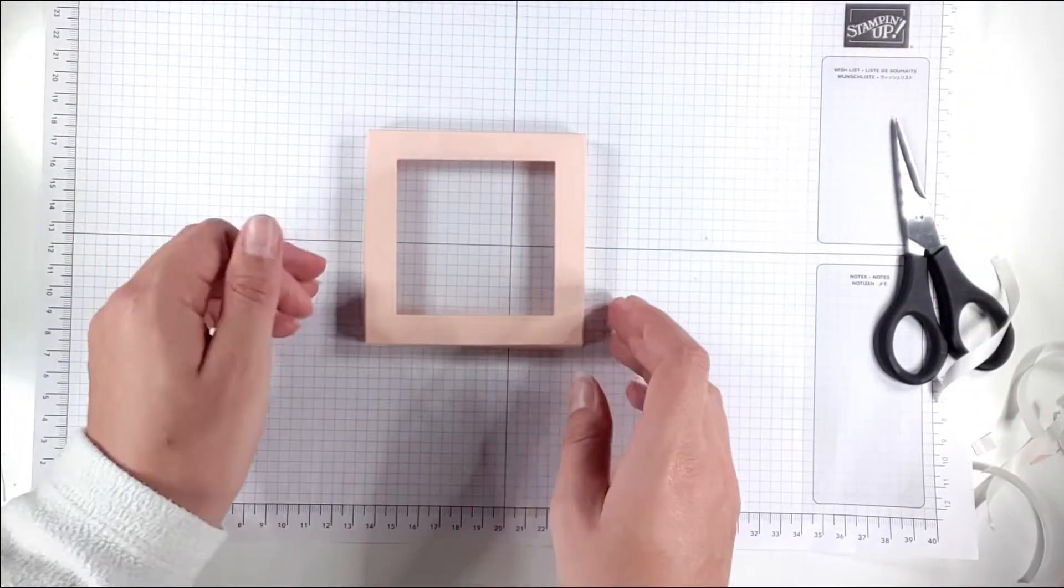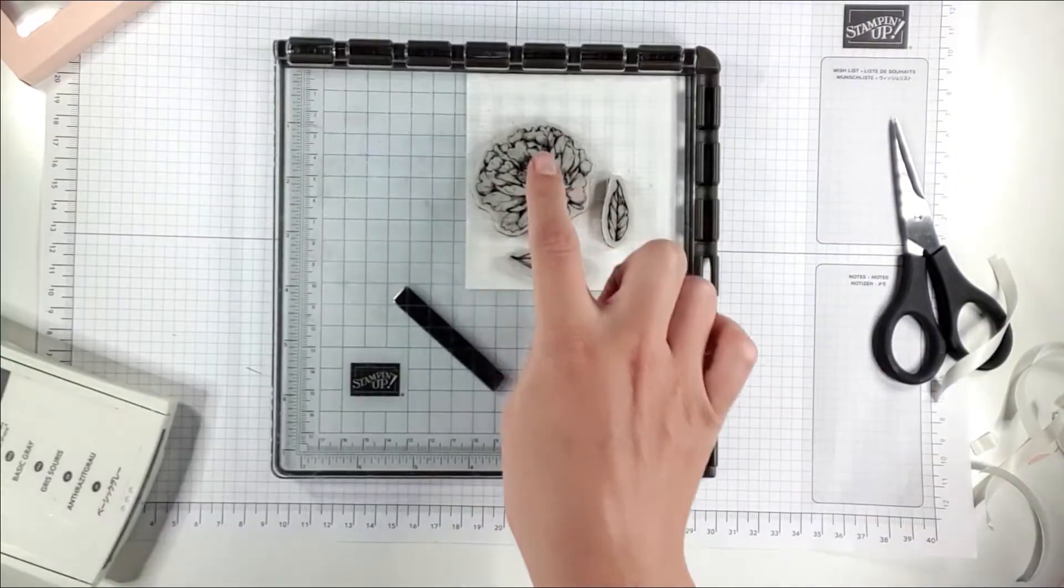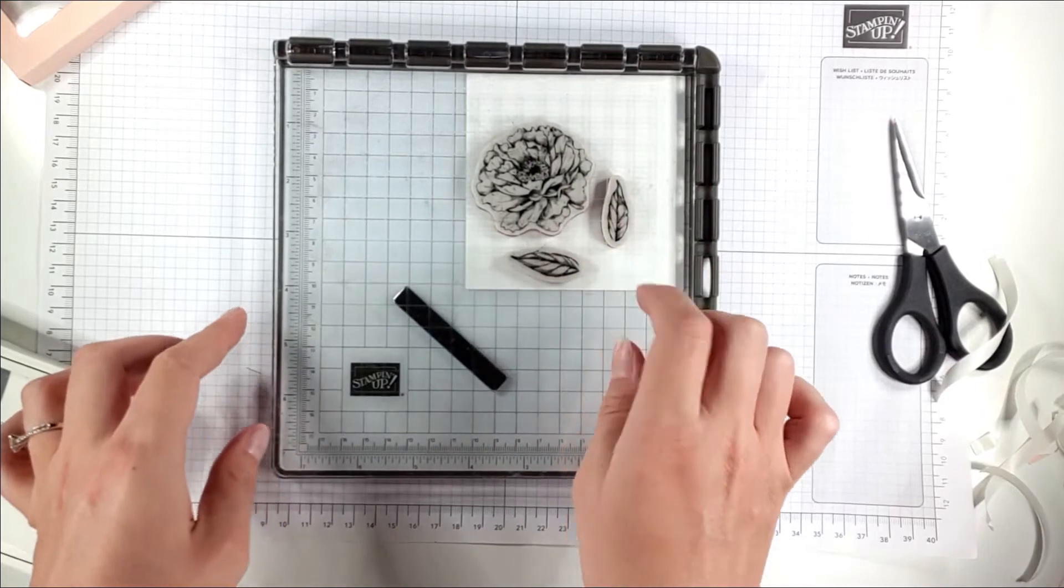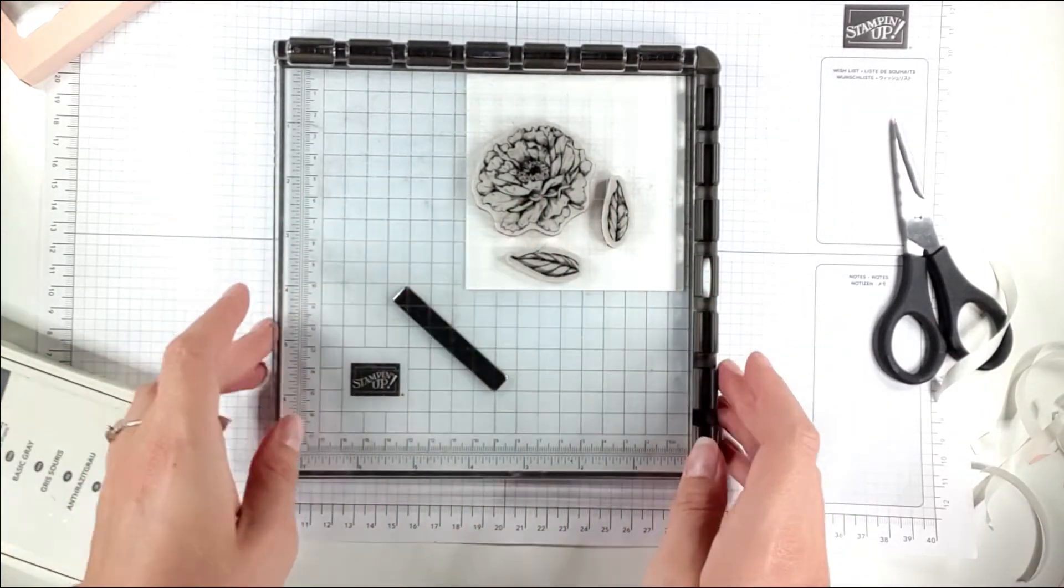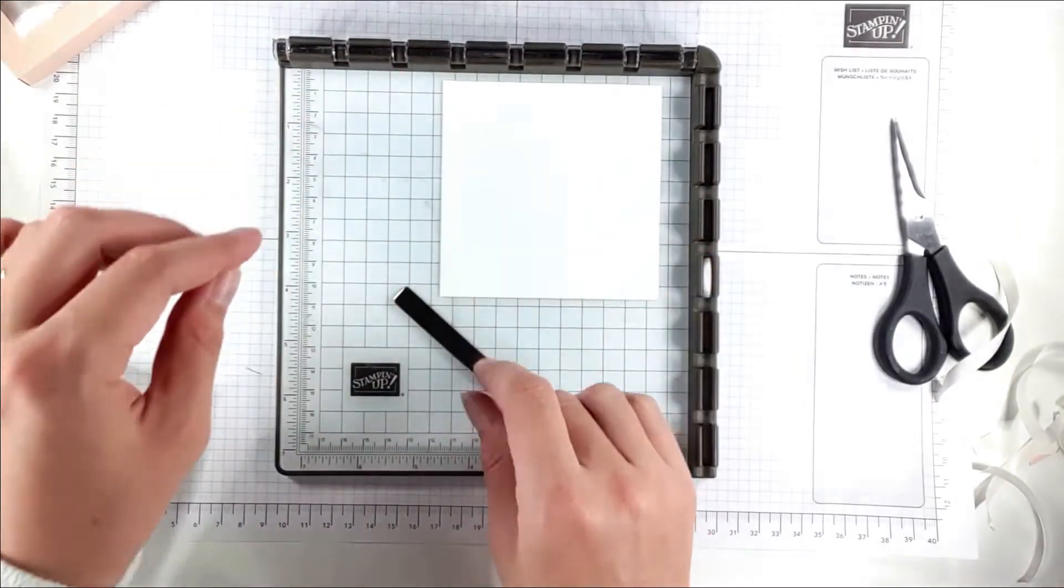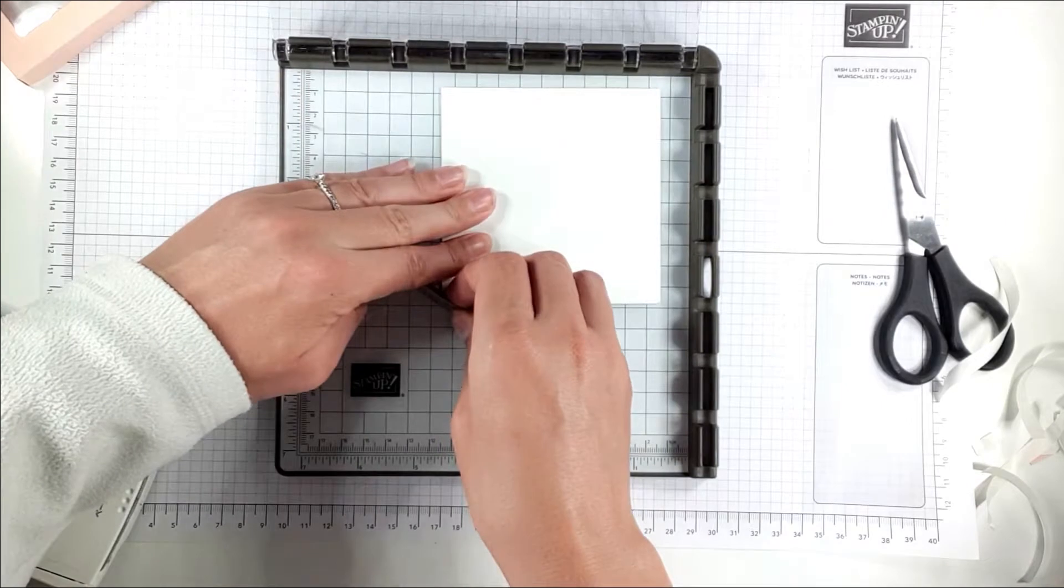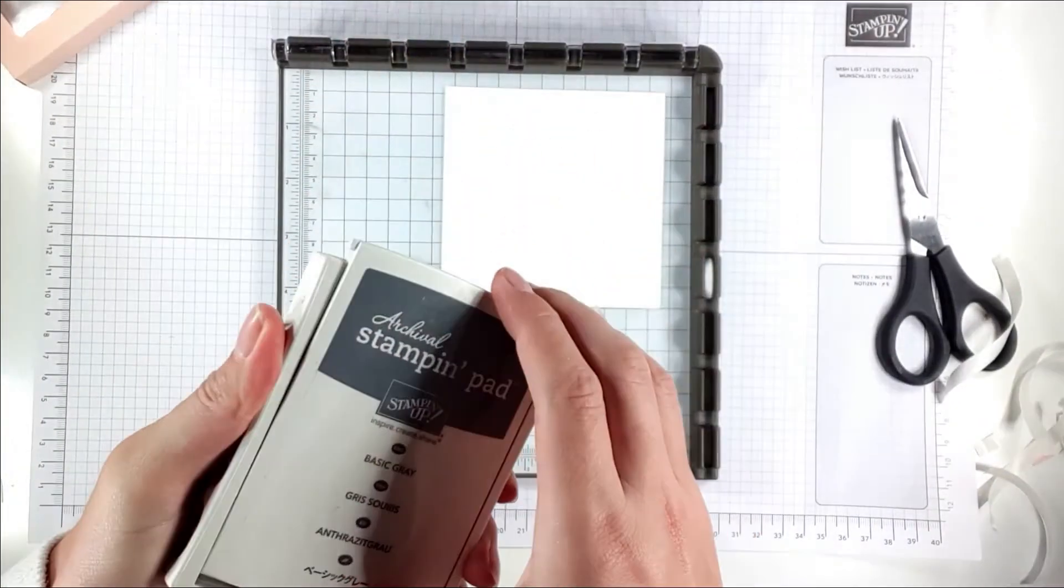There's our box lid. Now we're going to do our decorations. You can see here I've got three of the stamps from the Prized Peony stamp set set up on my Stamparatus. I'm just going to stamp them all at once. I've just got a scrap of whisper white cardstock here. I'll just stick that down with the magnet and then I've got my basic grey ink.